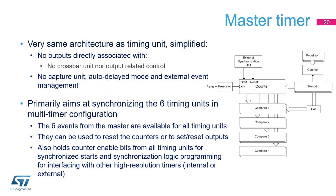The master timer shares the same architecture as the five timing units, with simplified programming since there are no directly associated outputs, captures, auto-delayed mode, or external event management. It primarily aims at synchronizing the five timing units for converters requiring more than two outputs. The six events from the master — period, compare one to four, and global synchronization — are available on all timing units and can be used to set or reset outputs or reset timers. The master timer also holds the counter-enabled bits from all timing units for a synchronized start, and embeds off-chip synchronization logic for multi-MCU systems.